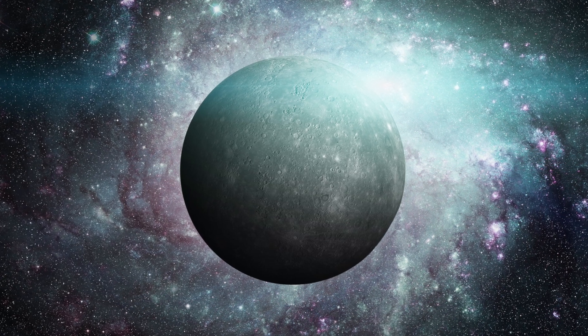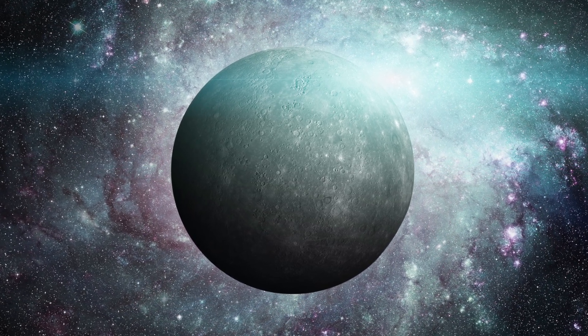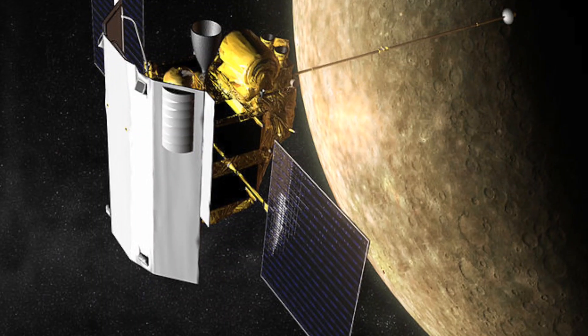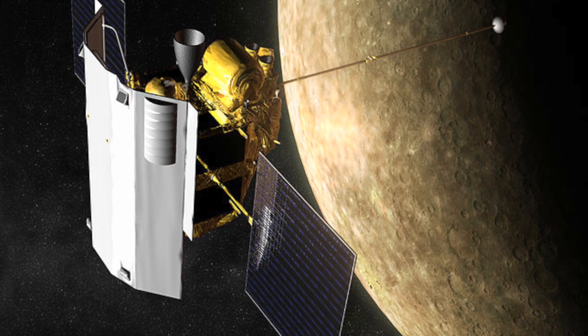Compared to other planets, Mercury is difficult to explore. The speed required to reach it is relatively high, and its proximity to the Sun makes it difficult to maneuver a spacecraft into a stable orbit around it. Messenger was the first probe to orbit Mercury.